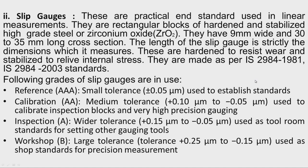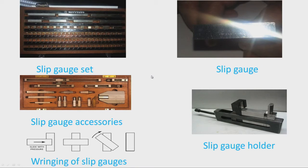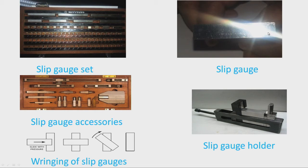The fourth grade is workshop grade or B grade, where the tolerance is wider at 0.25 micrometer. A slip gauge set consists of various slip gauges of different lengths. The finish of the slip gauge is almost mirror finish — lapping is carried out on the measuring surface so that very fine finish and very close tolerances can be attained.